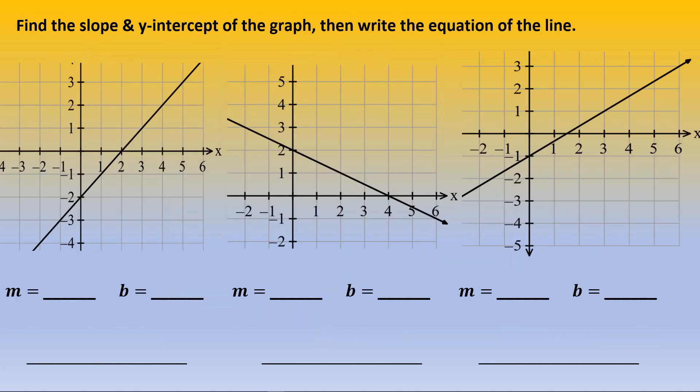Here we are to find the slope and y-intercept of the graph, then write the equation of the line. We're given a line passing through a couple of points, and if we count between any two points, we can see the slope is up 1 and over 1. So the slope is simply 1, and it passes through negative 2 on the y-axis. The equation is simply y equals x minus 2.